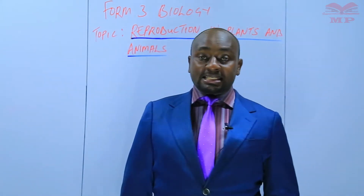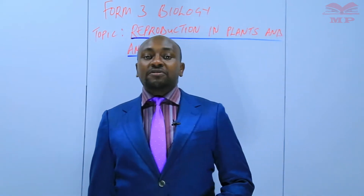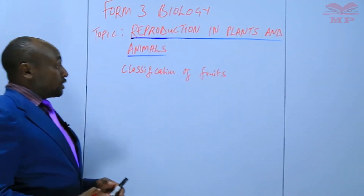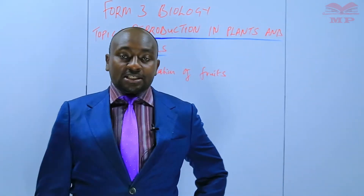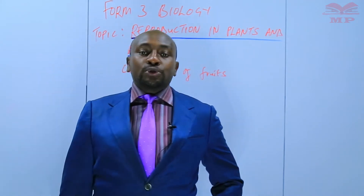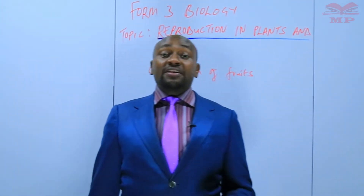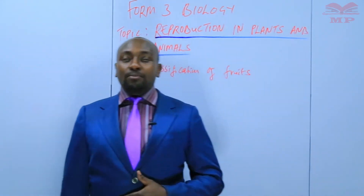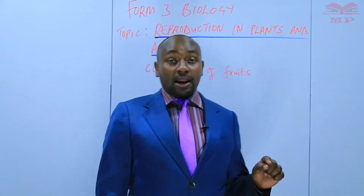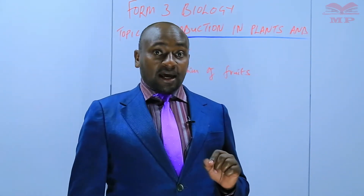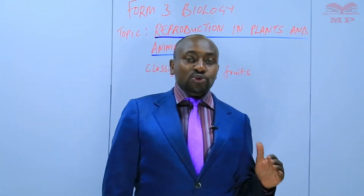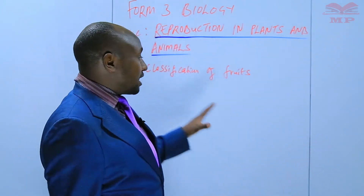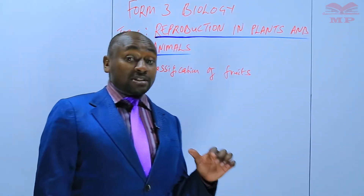We started with reproduction in plants and up to this stage we have reached the classification of fruits. We want to classify fruits broadly into two: succulent fruits and dry fruits. Succulent fruits are further classified into berries and drupes, while dry fruits are subdivided into dehiscent and indehiscent. We are going to have a chart that summarizes how fruits are classified.